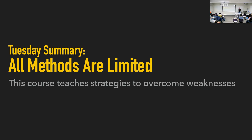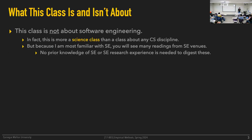There were a couple of slides about this course I didn't get to go through, so I'm going to go through those quickly — what this class is and isn't about, in case you're still wondering why you're here. Maybe your advisor forced you or you had no choices. So this class is not a software engineering class, even though I do research in software engineering. It's probably more of a science class than a class about any particular CS discipline.